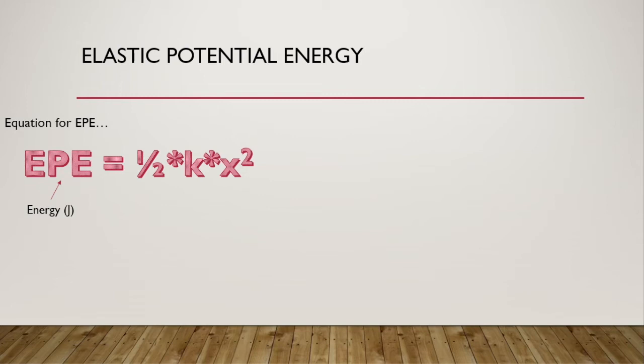EPE stands for energy, which has the units of joules. K is the spring constant — we'll talk about that in a sec — and the units of the spring constant are newtons over meters. X, like we talked about, is the displacement from the natural length, and because it's displacement, it's measured in meters.